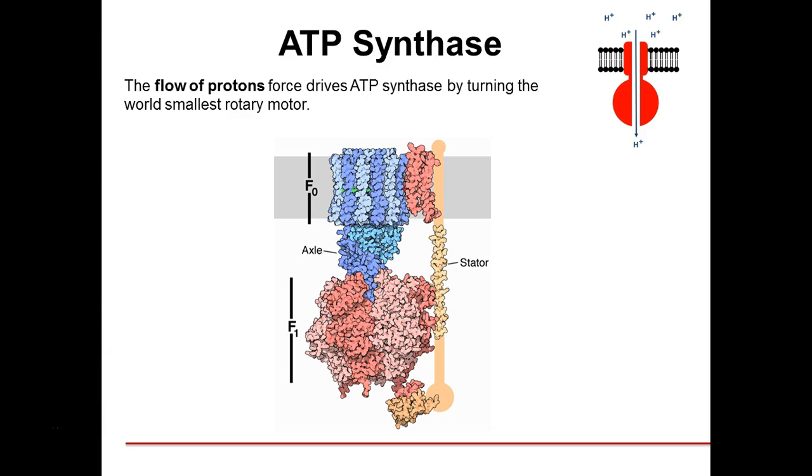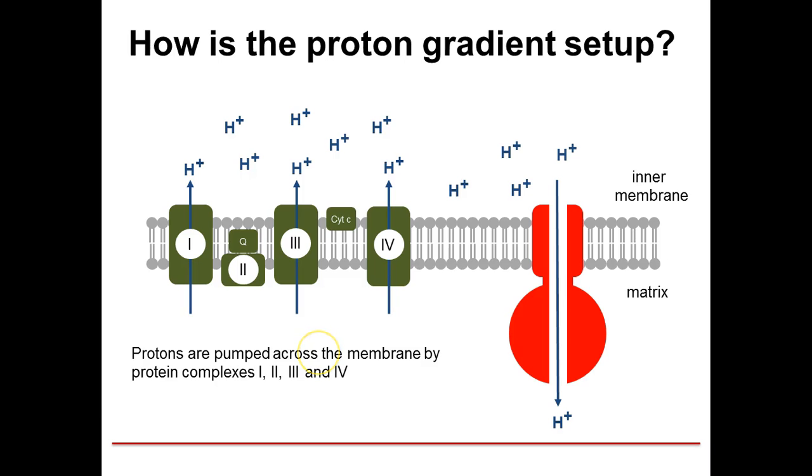ATP synthase is like a small rotary motor. It takes the energy of the protons flowing back through it to rotate this F1 region and use that rotation to drive the formation of ATP from ADP. To drive that enzyme we're going to need to set up a proton gradient.